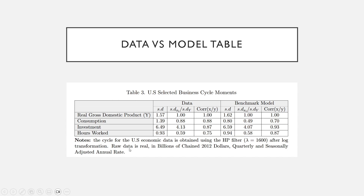In this video I'm going to show you the commands to produce this table from my paper. We have the standard deviation for GDP, consumption, investment, and hours worked. We also compute a ratio dividing each variable's standard deviation by GDP's standard deviation. Consumption and hours worked are less volatile than GDP, while investment is 4.13 times more volatile than GDP.